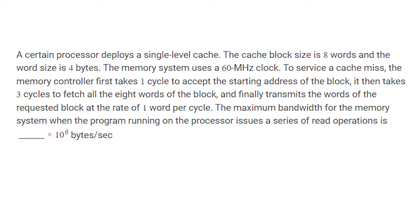The cache block size is 8 words and the word size is 4 bytes. The memory system uses a 60 MHz clock. To service a cache miss, the memory controller first takes one cycle to accept the starting address of the block. Then it takes three cycles to fetch all the 8 words of the block. And finally transmits the words of requested block at rate of one word per cycle.